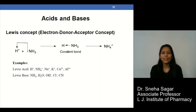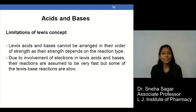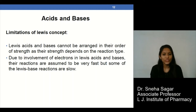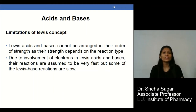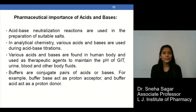Certain examples of Lewis acids and Lewis bases are mentioned in this slide. The limitations of the Lewis concept are that Lewis acids and bases cannot be arranged in order of strength because it depends on the reaction type. Due to involvement of electrons, reactions are assumed to be very fast, but some Lewis base reactions are very slow. Next is the pharmaceutical importance of acids and bases.